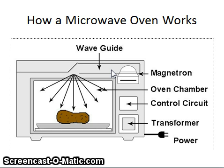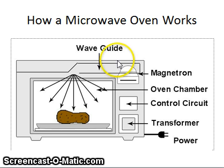Microwaves of this wavelength and frequency are guided along and sent down into the main cooking chamber of the microwave oven. Microwaves of this wavelength and frequency are absorbed by many molecules that make up food, such as water, fat, and sugar, but they aren't absorbed by plastic or metal, so they purely heat up the food, which is very useful.